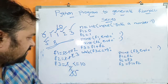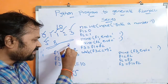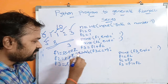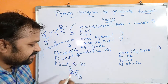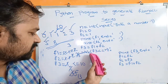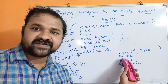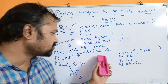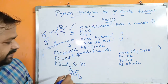Next f1 becomes f2, f2 becomes 5, and f3 becomes 8. Then 8 gets printed. After that, f3 becomes 13. Once again control goes to the while loop — while 13 is less than or equal to 10, condition is false. So control comes out from the while loop. This is the output now.